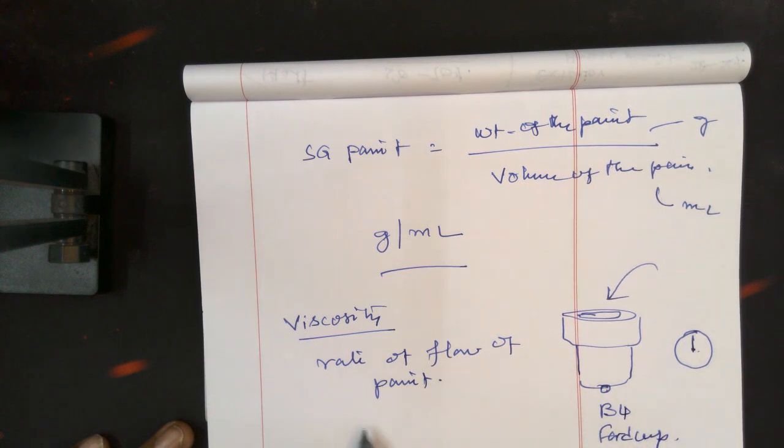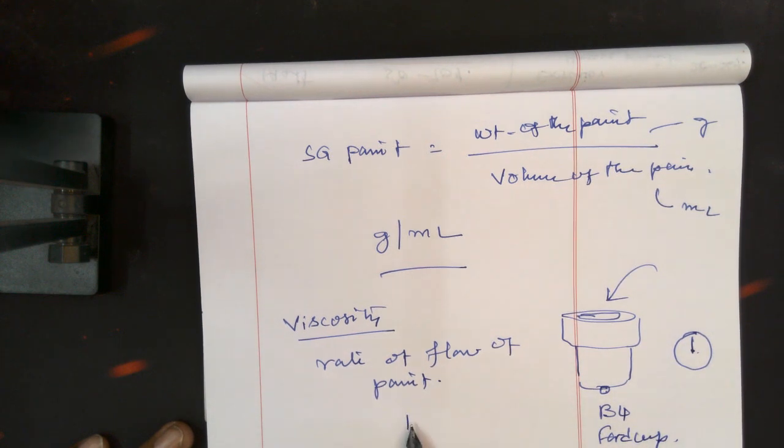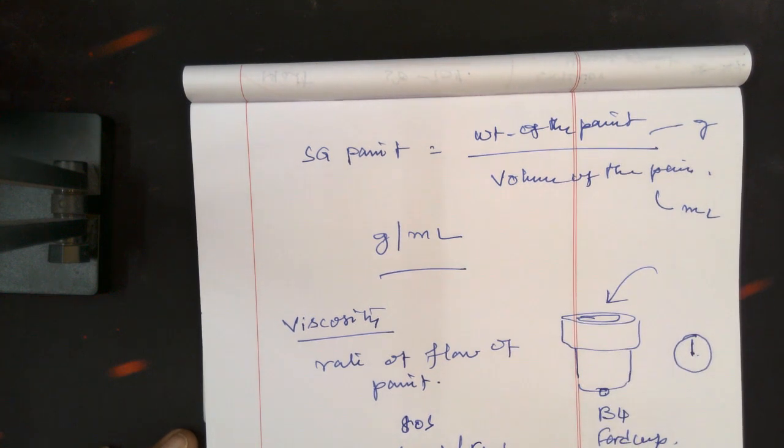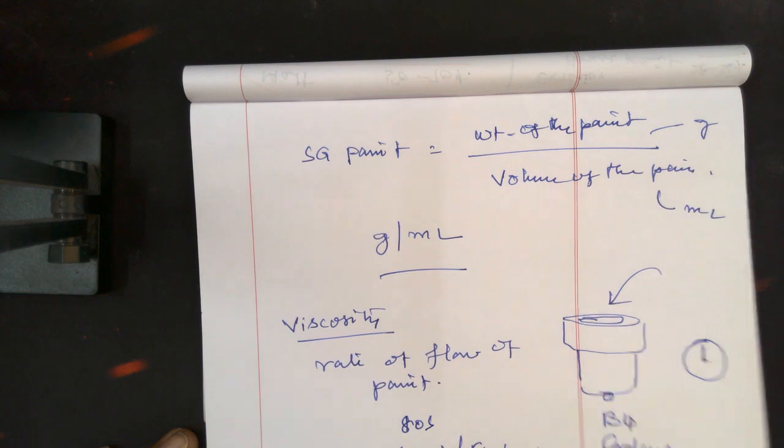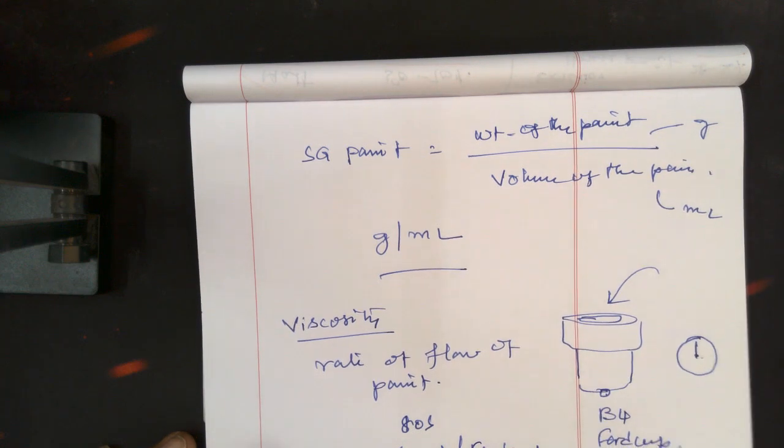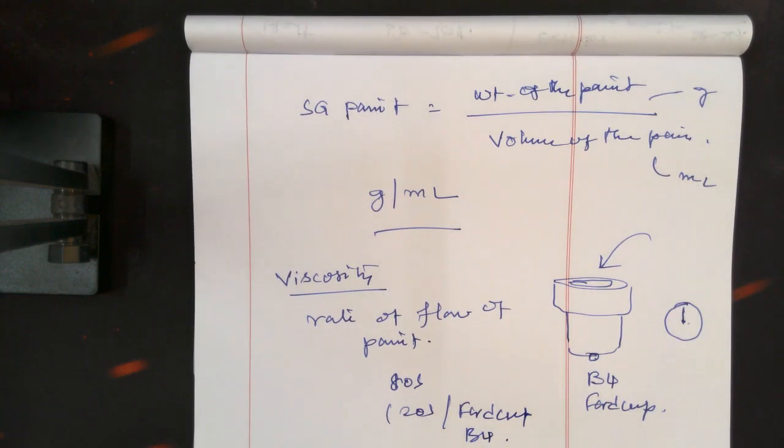So we give it in terms of, for example, 80 seconds or 120 seconds in B4 cup, likewise we mention. So this is one of the regular controlling parameters maintained in any paint industry.